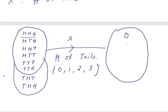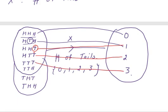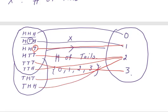So X can take values 0, 1, 2, and 3. HHH maps to 0. HTH has one tail, so it maps to 1. HHT also maps to 1. HTT maps to 2. TTT maps to 3. TTH maps to 2. THT maps to 2. THH maps to 1.